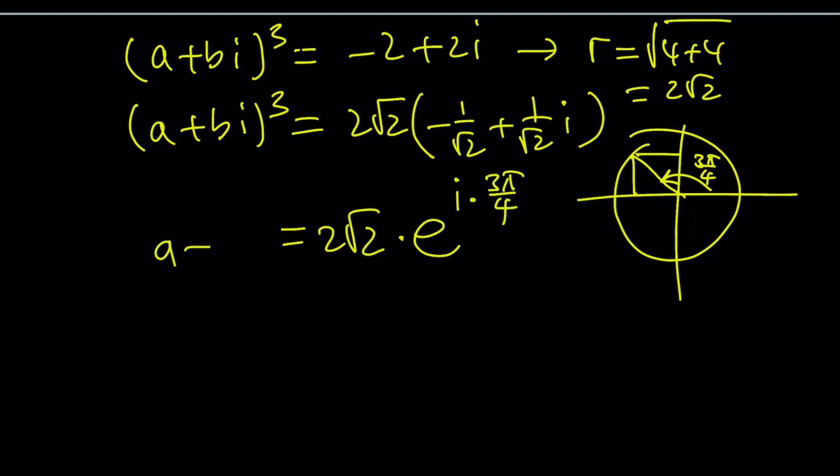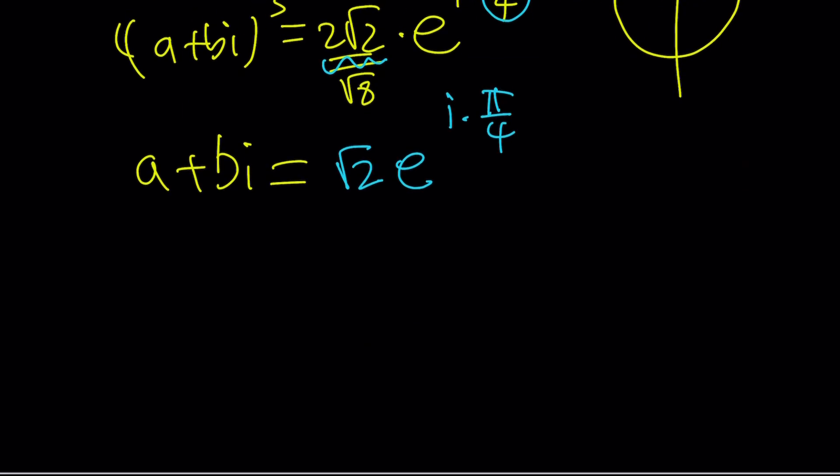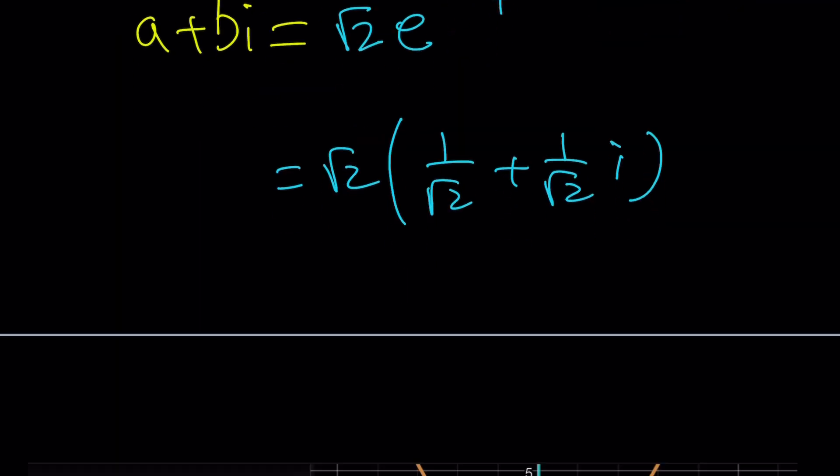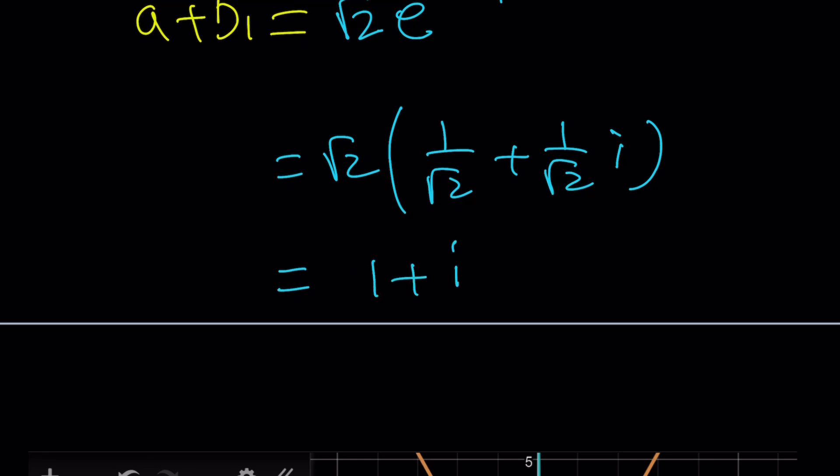Cube rooting both sides to get one solution: ∛(2√2) = √2, and dividing the angle by 3 gives e^(i·π/4). This equals √2(1/√2 + 1/√2·i) = 1 + i. This means a = 1 and b = 1.